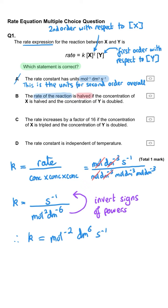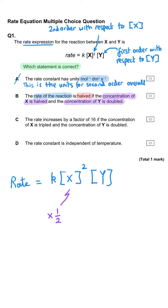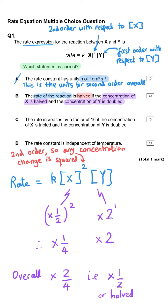Option B: the rate of reaction is halved if the concentration of x is halved and the concentration of y is doubled. Since x is second order, halving it makes the reaction four times smaller, and doubling y, which is first order, makes the reaction twice as fast. That doubling and quartering does result in half the original rate, so B is correct.